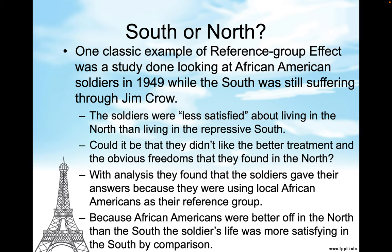One classic example of reference group effect was a study done looking at African-American soldiers in 1949, while the South was still suffering through Jim Crow. The soldiers were less satisfied about living in the North than living in the repressive South. With analysis, they found that the soldiers gave their answers because they were using local African Americans as their reference group. Because African Americans were better off in the North than the South, the soldiers' life was more satisfying in the South by comparison.